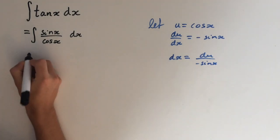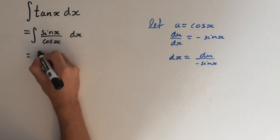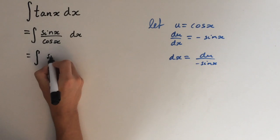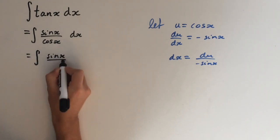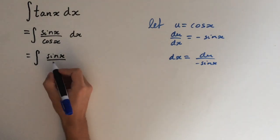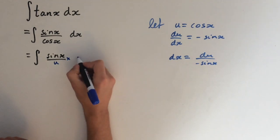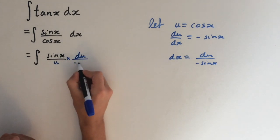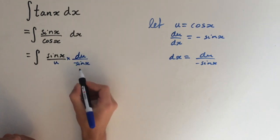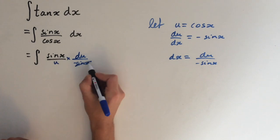So this is going to give us integral of sin(x) over u times, so we substitute for dx here, du over minus sin(x). So you can see here that the sin is going to cancel out.